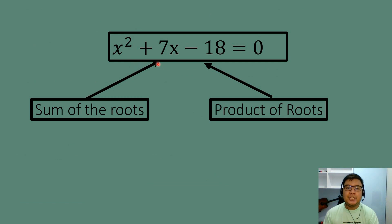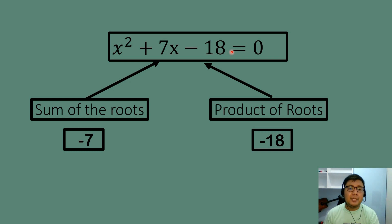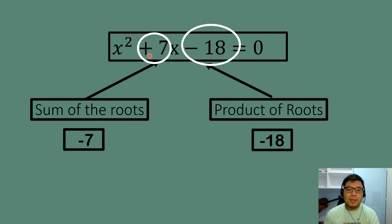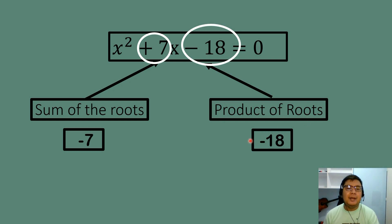Let's look at the given quadratic equation and see the relationship between the numerical coefficients and the sum and product of the roots. The sum of the roots is negative 7 and the product of the roots is negative 18. The numerical coefficient of the linear term is positive 7, while the sum of the roots is negative 7 — the sign changed. For the constant term, the value is negative 18, and the product of the roots is also negative 18 — it stayed the same.